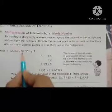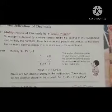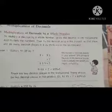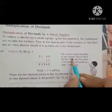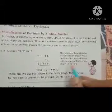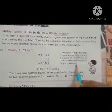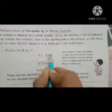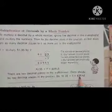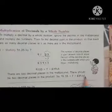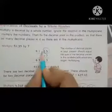For example, 91.35 multiplied by 7. First, we ignore the decimal point. The number of decimal places in your answer should be equal to the number of decimal places in the number you began multiplying. Here, how many numbers are there after the decimal point? Two numbers. And the product is 639.45. After the decimal point, two numbers are there. At first we have to remove this decimal point and write 9135 into 7.